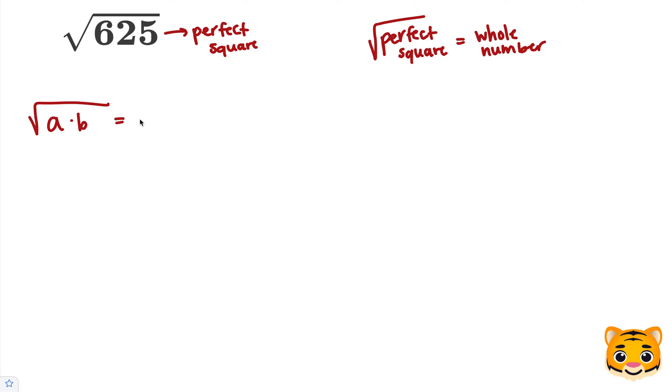The square root of a times b is equal to the square root of a times the square root of b, where a and b are both two numbers inside of a square root, and we can then rewrite these as two individual square roots multiplied together.